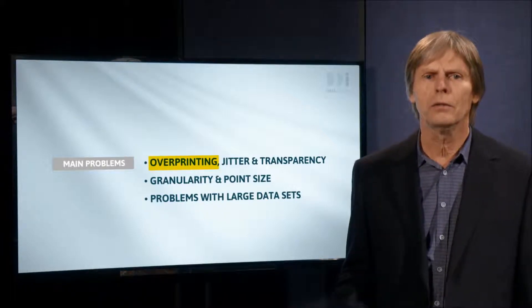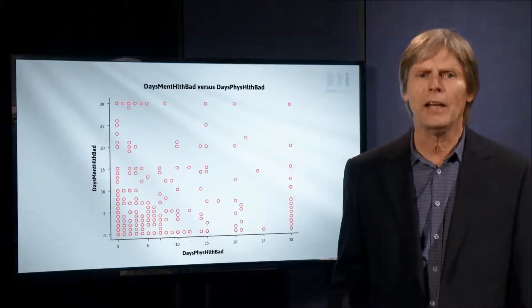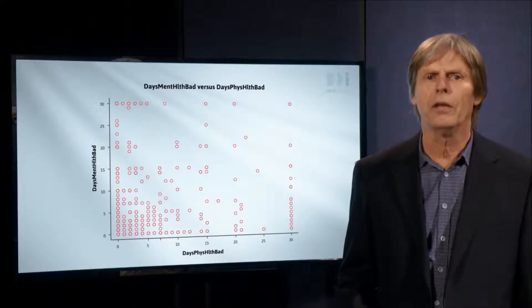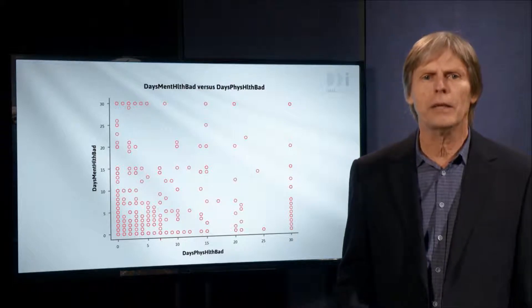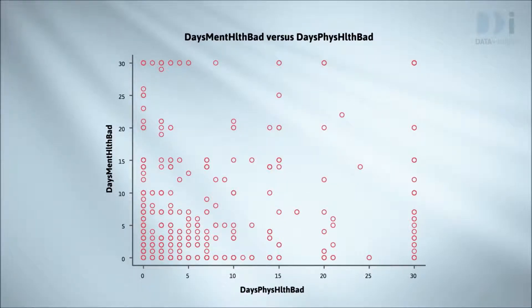We'll start with overprinting, which is just as its name suggests. I'm using our NHANES 1000 file and plotting the average number of days in a month when the respondents' mental health was bad versus the average number of days where their physical health was bad. The data seems to be spread all over the plotting window. There are 747 people represented here — the rest were missing. We can only see a small fraction of the 747 points because large numbers of people gave the same combination of values. When we plot two different people with the same set of values, the second point sits directly on top of the first. This is called overprinting. When there's exact overprinting, we can't see how many points there are at any given position — it always looks like there is just one.